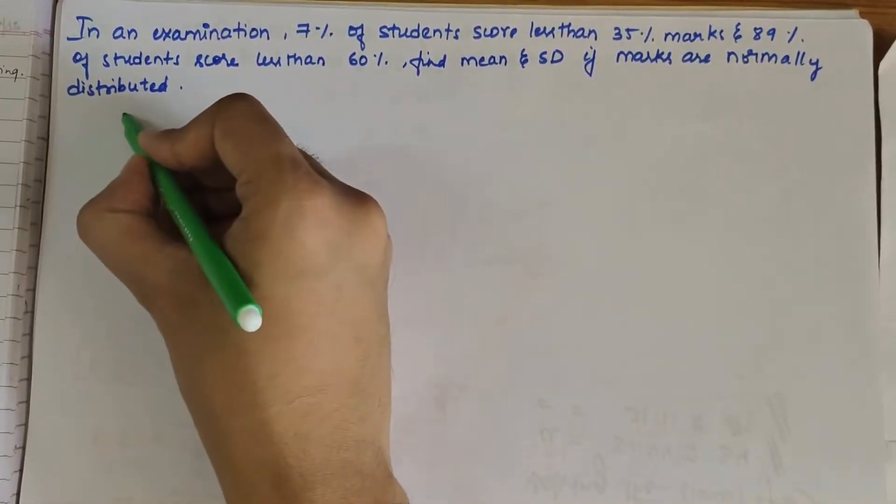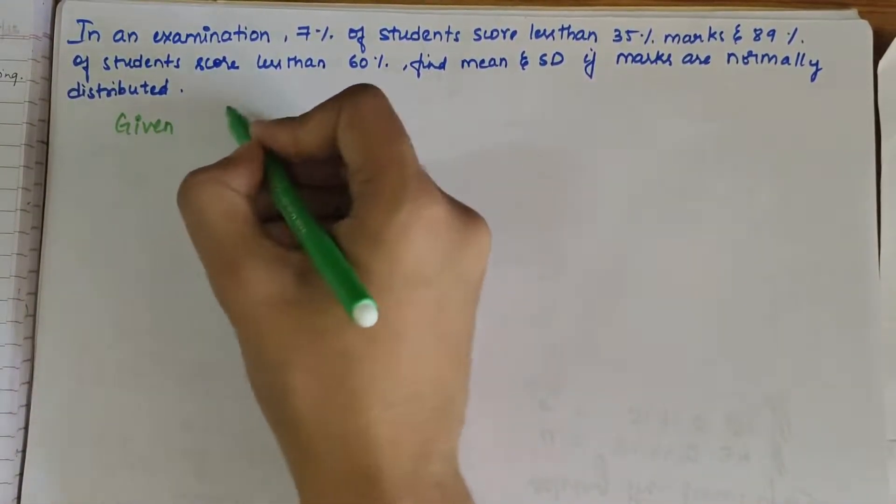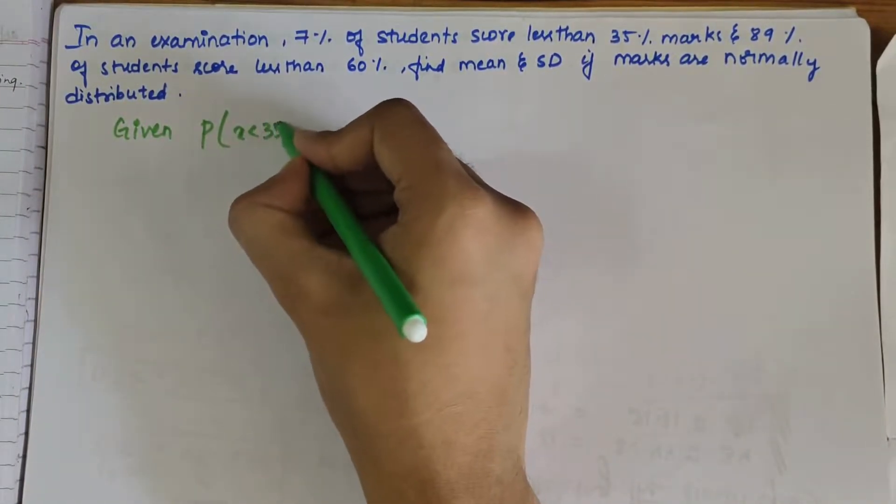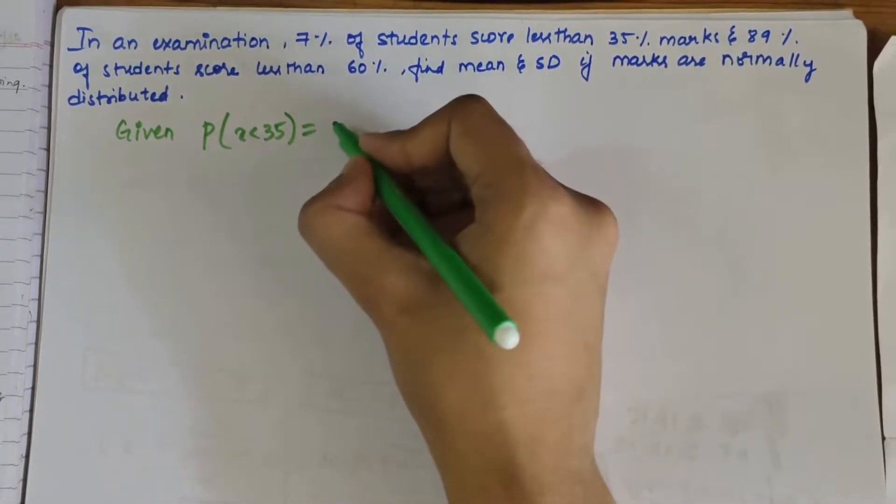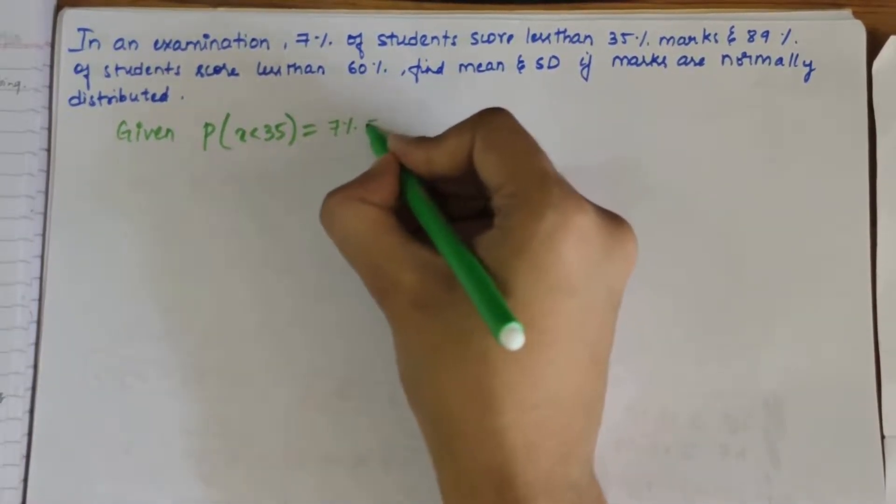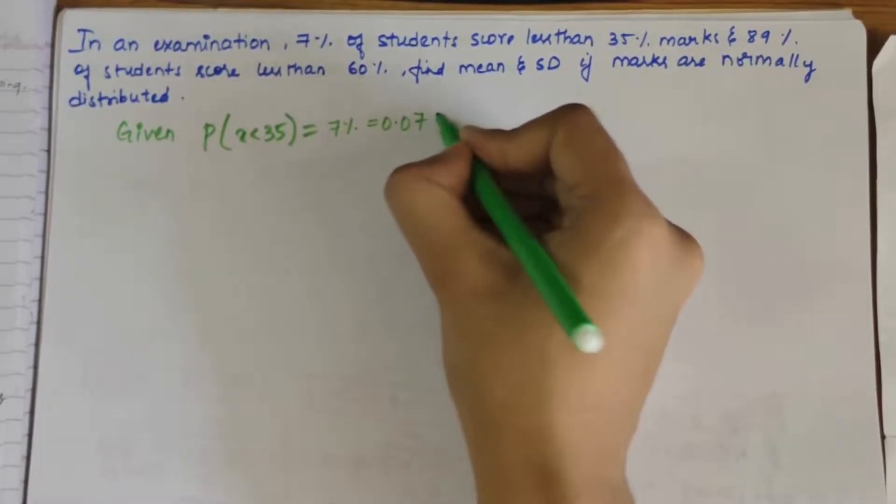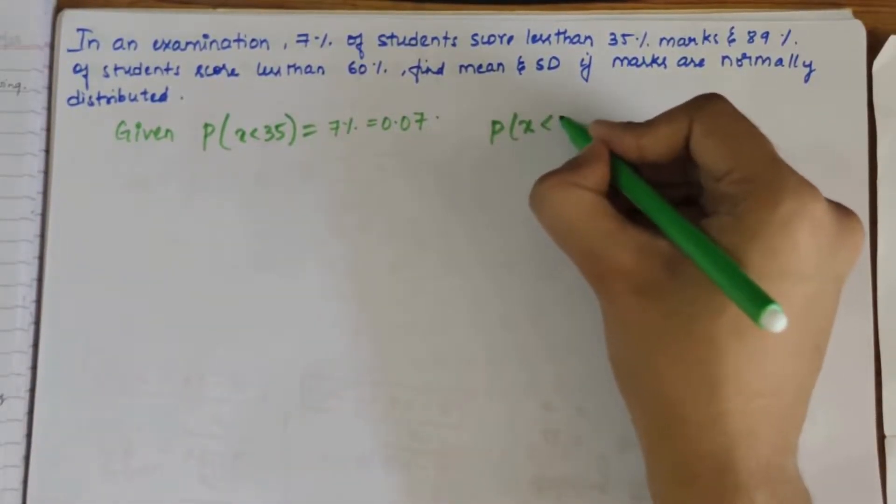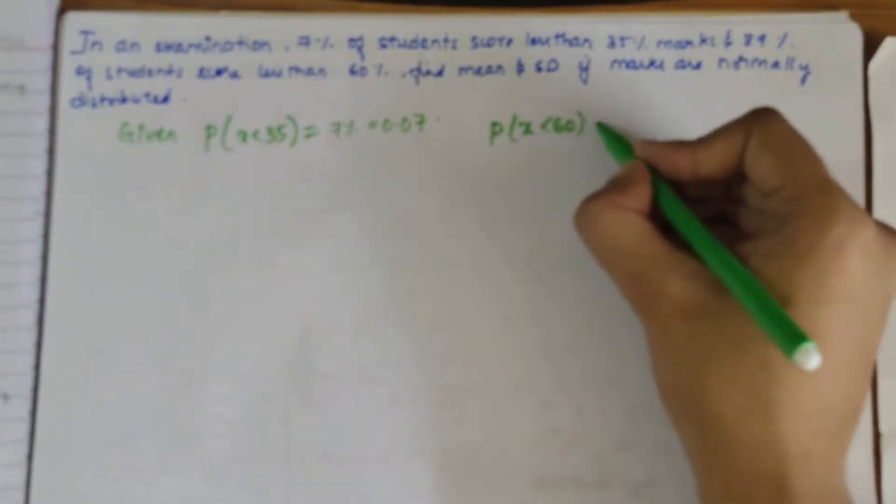First, let's write the given values. Given: P(X less than 35) is 7%, that is 0.07. Similarly, P(X less than 60) is 89%, that is 0.89.